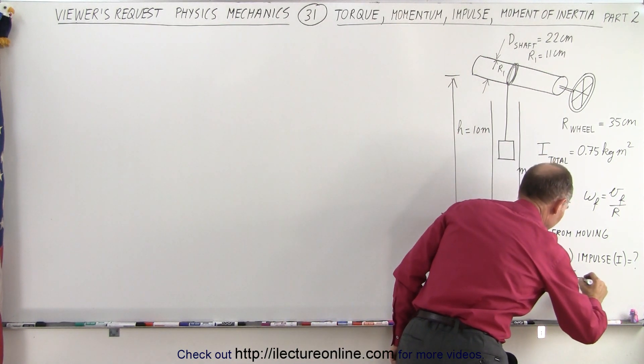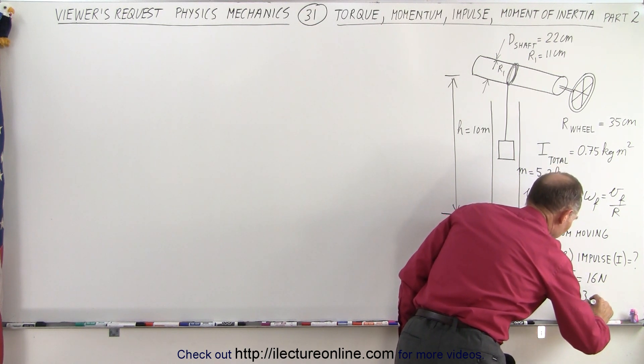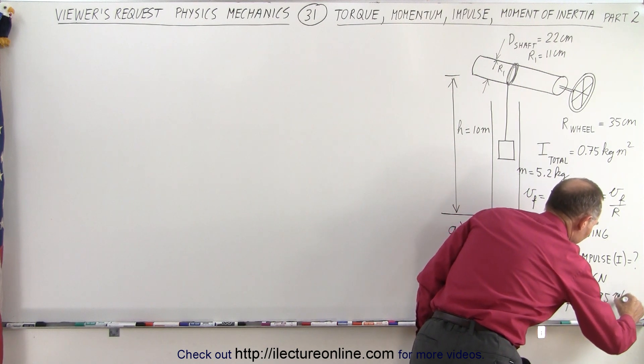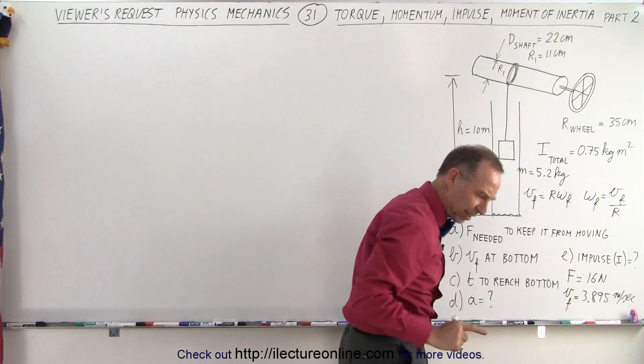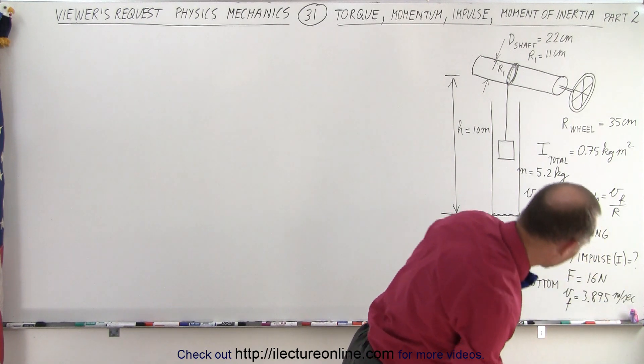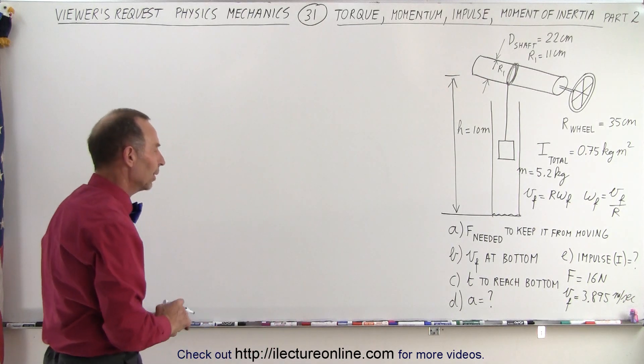So the force, I believe, was equal to 16 newtons. And the velocity final was equal to 3.895, if I'm not mistaken, meters per second. Let me quickly check to see if I got, if I remember the right amount. 3.895 meters per second. That's right. So we calculated that in the previous video on part one.